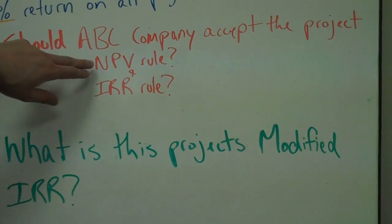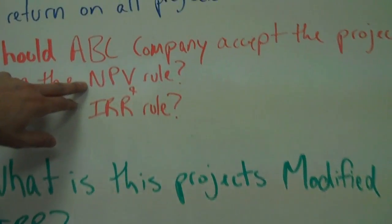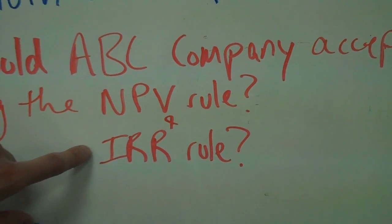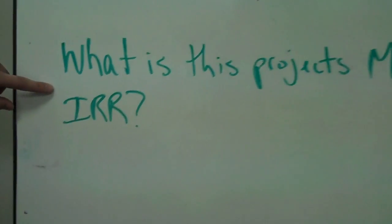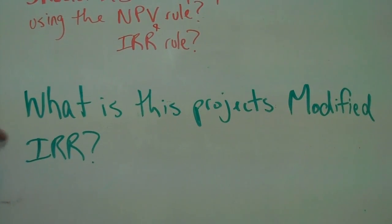And we are going to take a look at the NPV rule. Should we accept this project with the NPV rule? Net present value, internal rate of return rule, and then we are going to take a look at what is the project's modified internal rate of return.